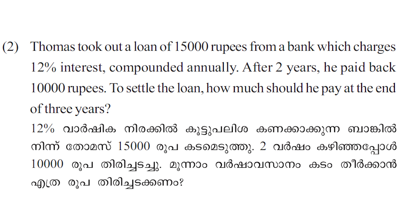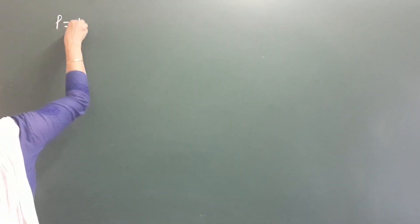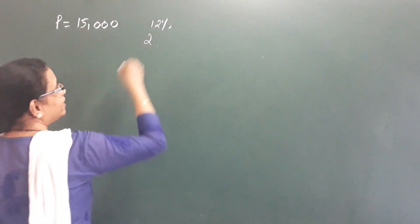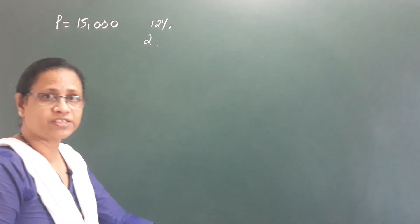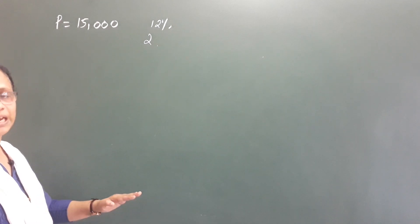Next question: Thomas took out a loan of 15,000 rupees from a bank which charges 12% interest compounded annually. After 2 years, he paid back 10,000 rupees. To settle the loan, how much should he pay at the end of 3 years? The principal is 15,000 rupees at 12% interest.